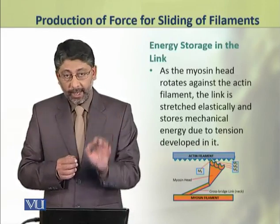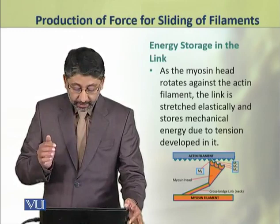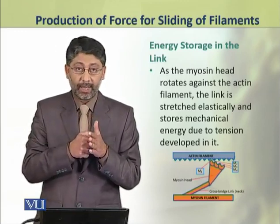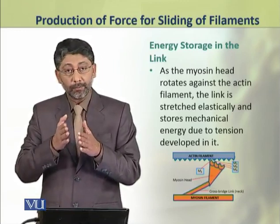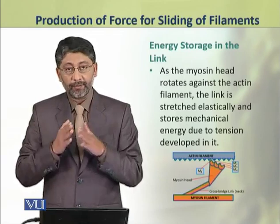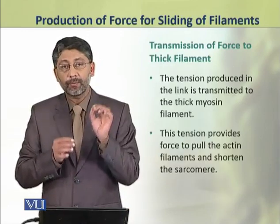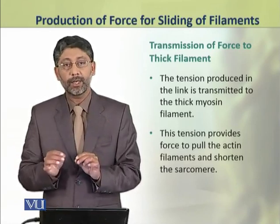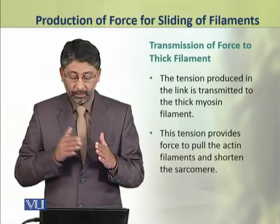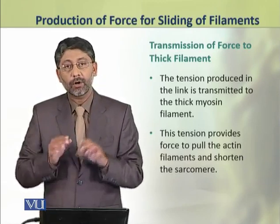As the myosin head rotates against the actin filaments, the link is stretched elastically. As a result, tension is developed in it. This tension produced in the link is transmitted to the thick myosin filament, and this tension provides the force to pull the actin filaments and shorten the sarcomere.